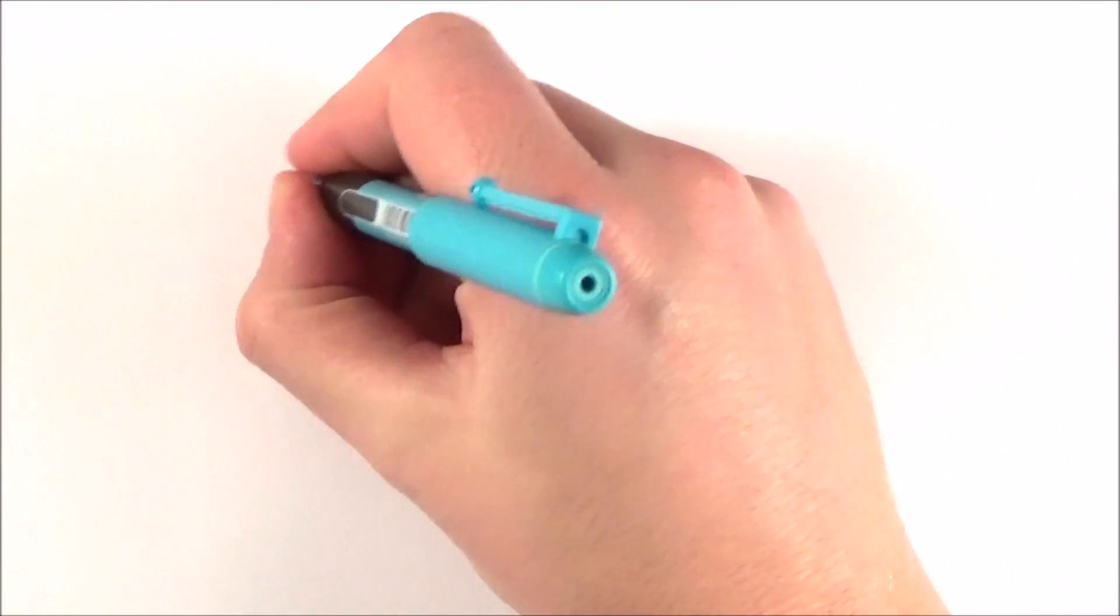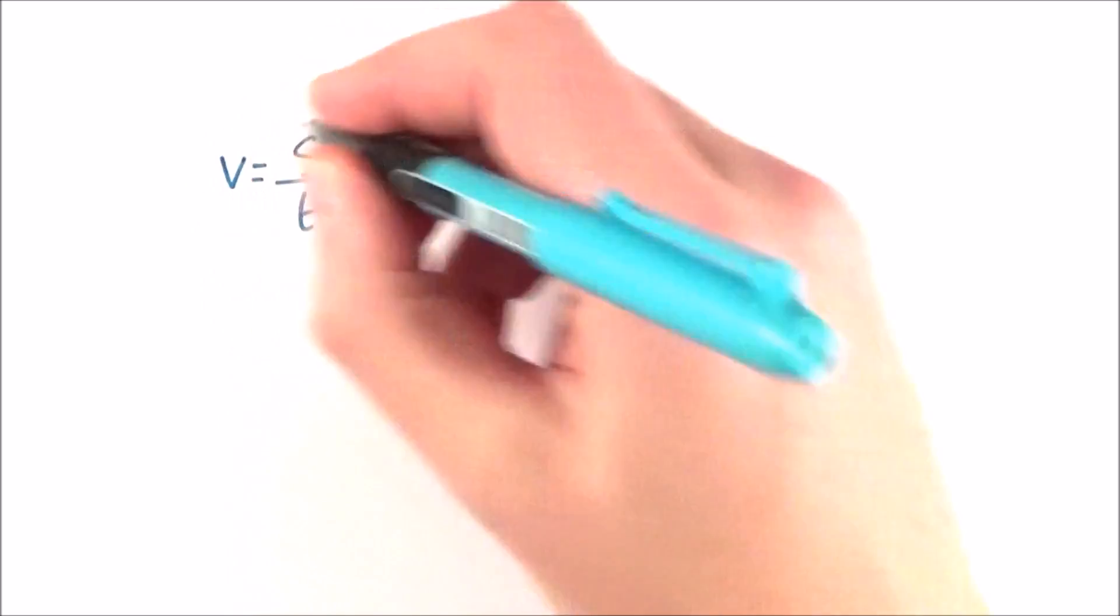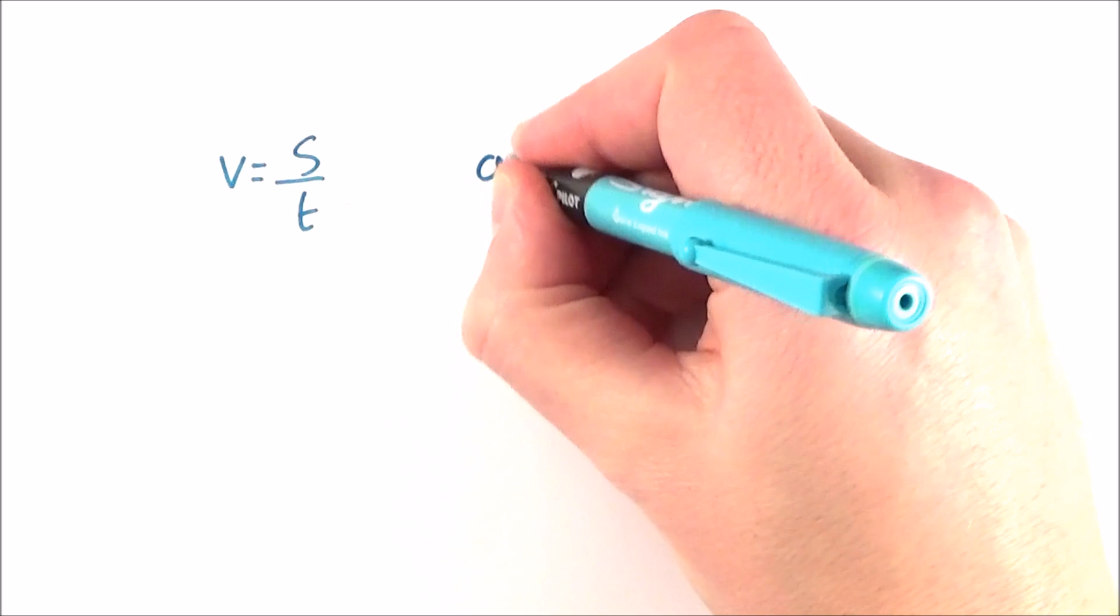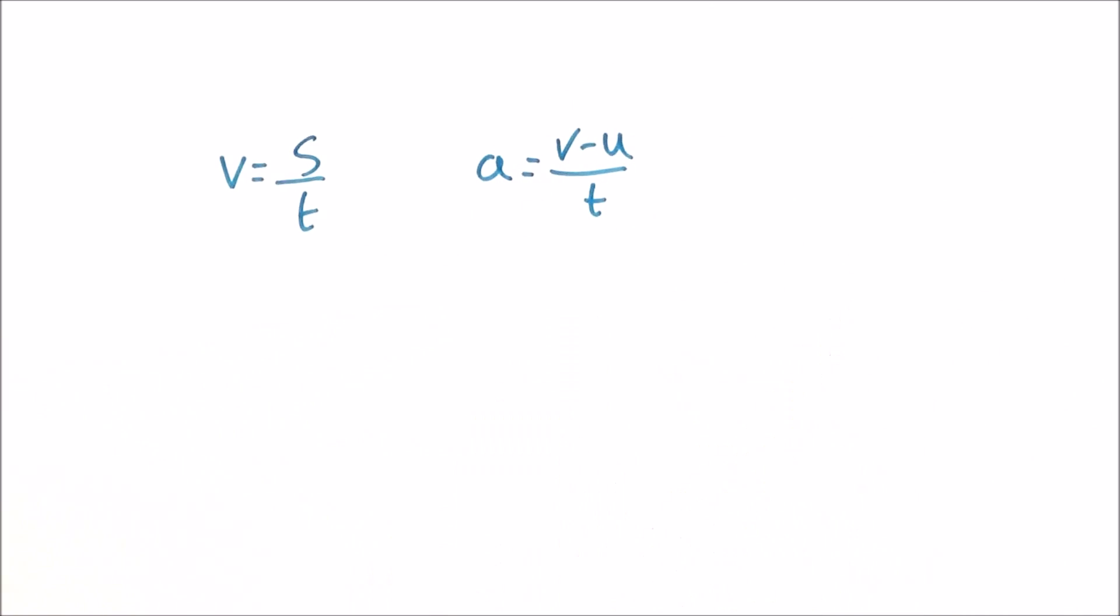So it's all very well using a series of equations, perhaps s/t = v, or maybe v-u/t = a. These are all very well, but they don't really tell us about what happens in real life.